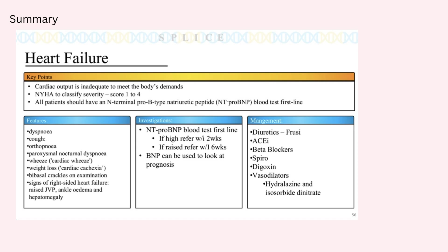We can also categorise heart failure as low output heart failure and high output heart failure. Low output heart failure is when the cardiac output is reduced and it fails with increased exertion. High output failure, although rare, is caused by anything that is going to increase the metabolic demand on the heart — things like anaemia, pregnancy, hyperthyroidism, phaeochromocytosis, arteriovenous malformation, and beriberi.